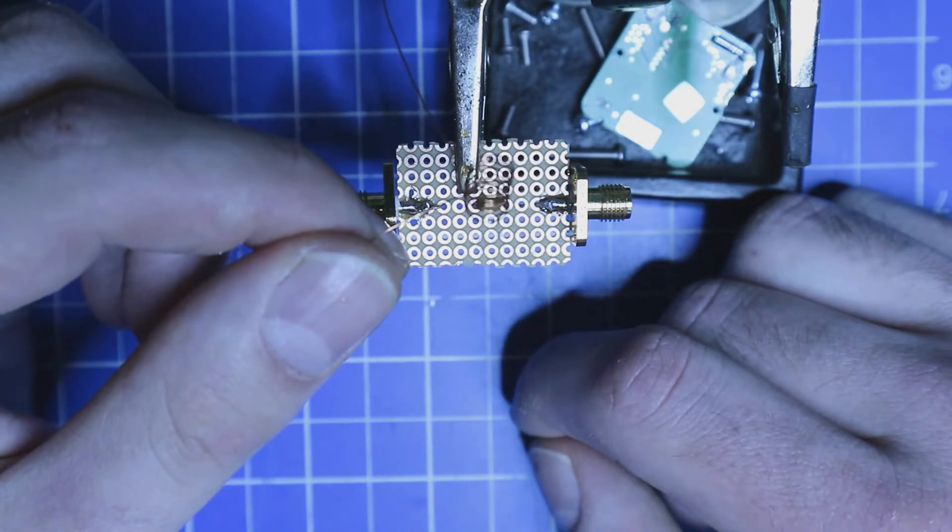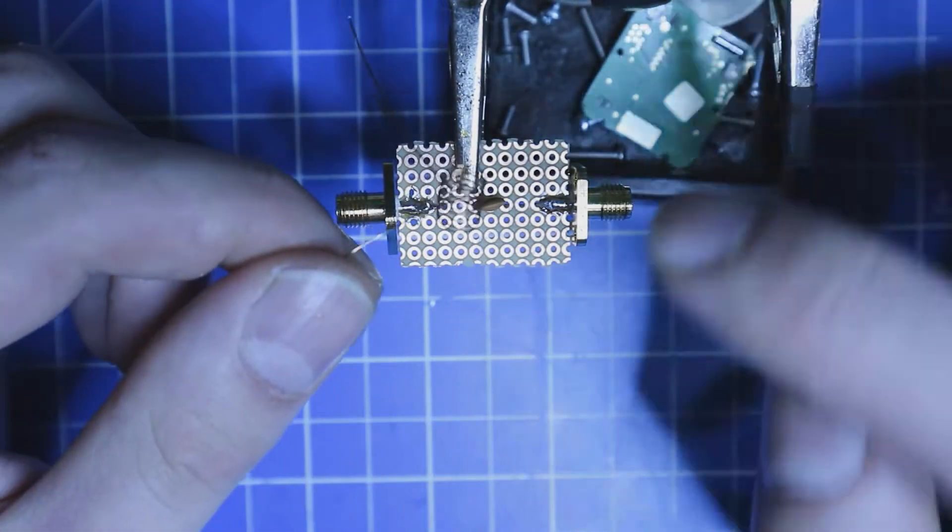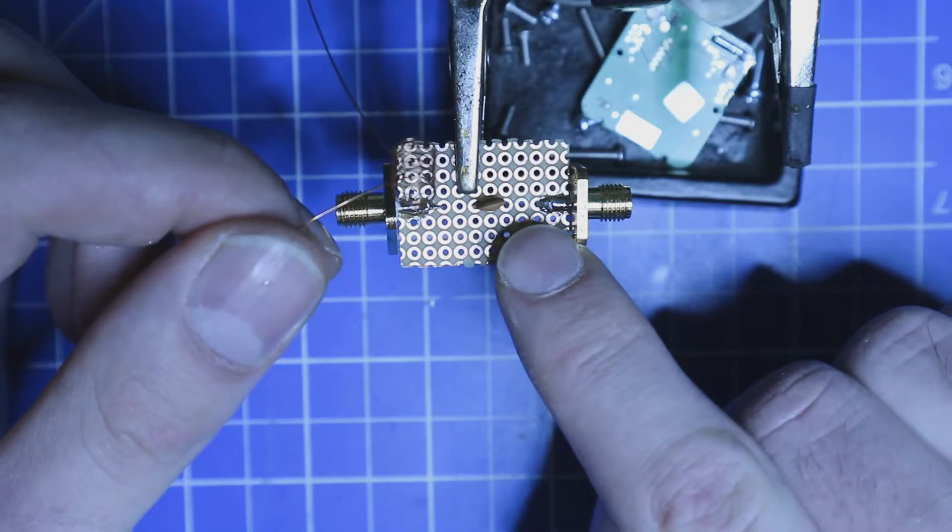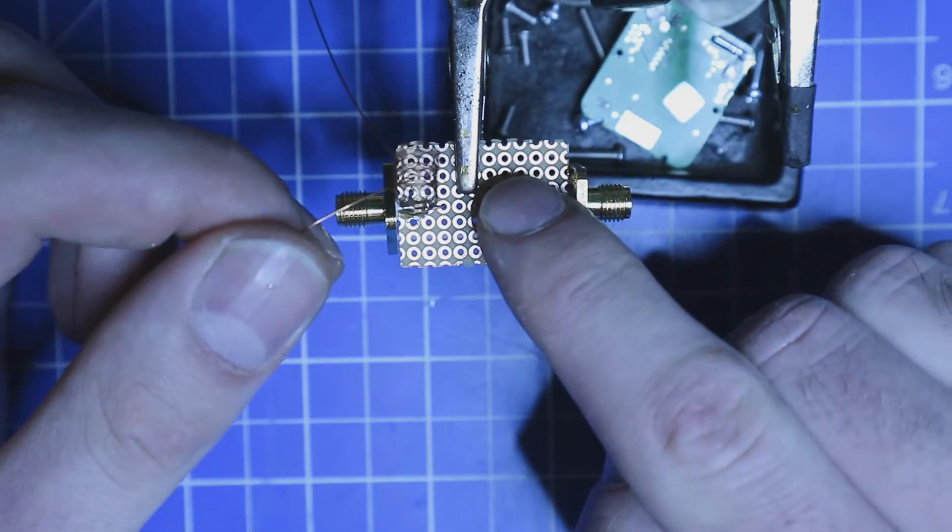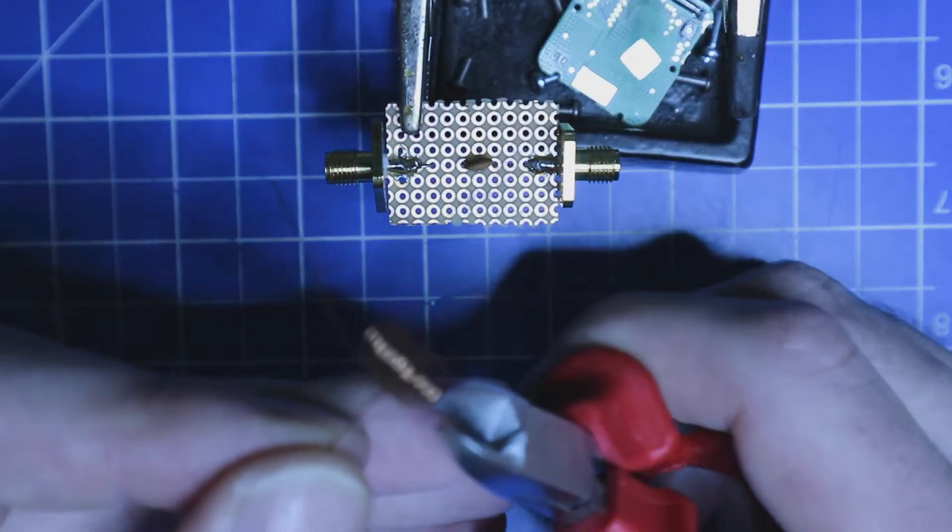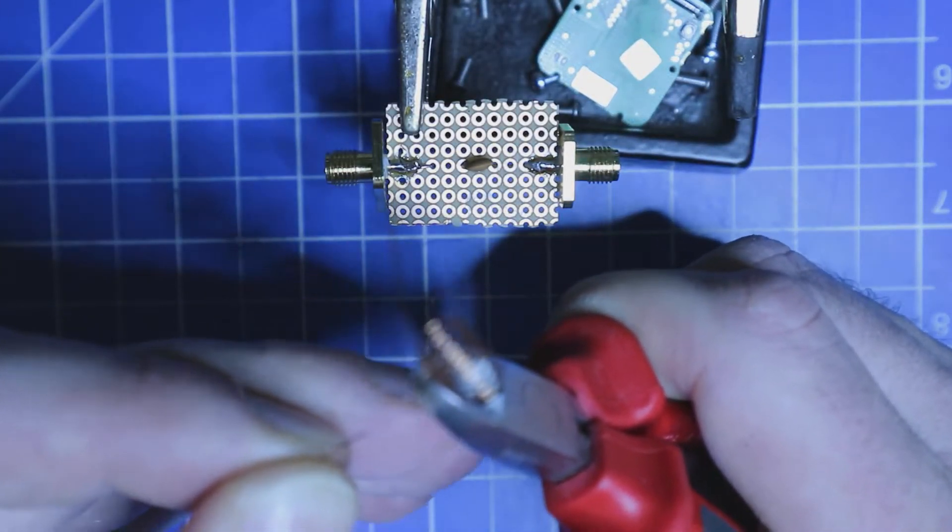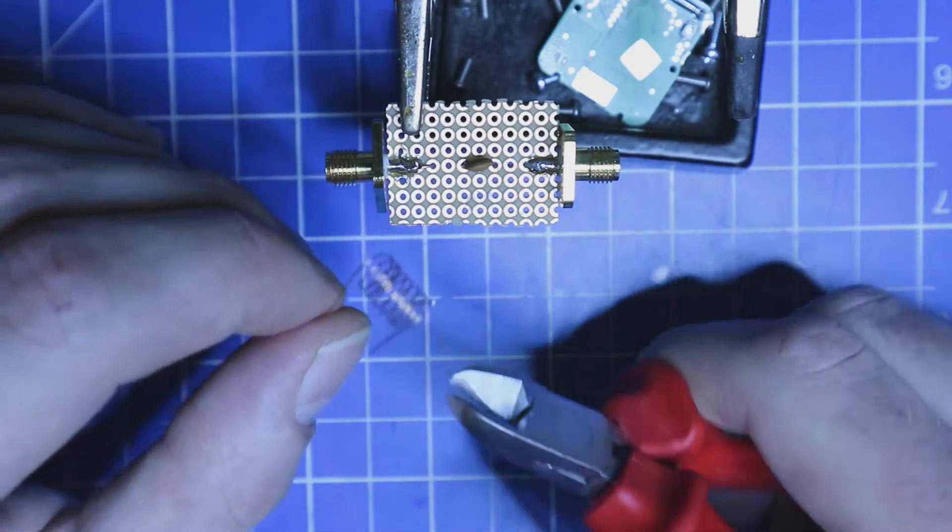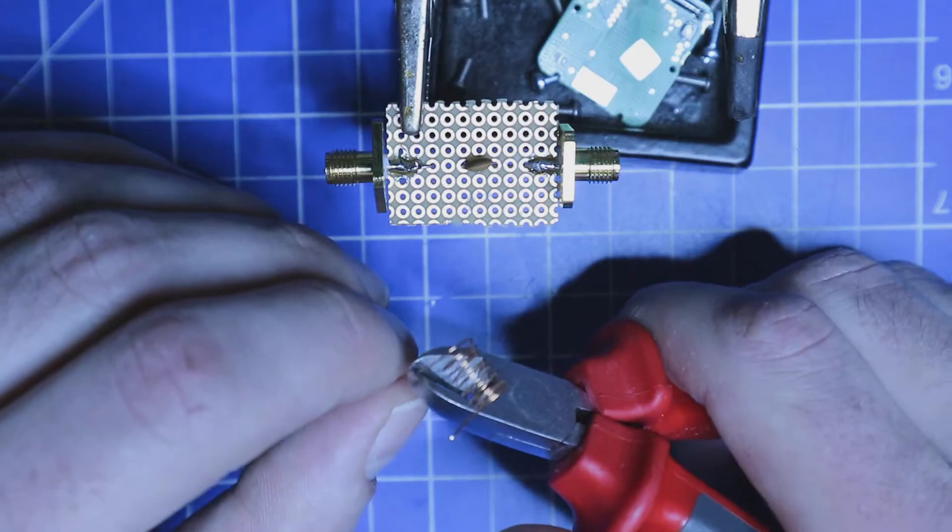I'm going to solder the coil between the inner connector on one side and some pad on the outside here. Therefore, I'm going to cut the excessive wire on both sides a bit.